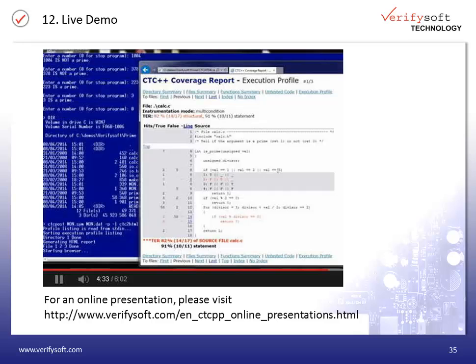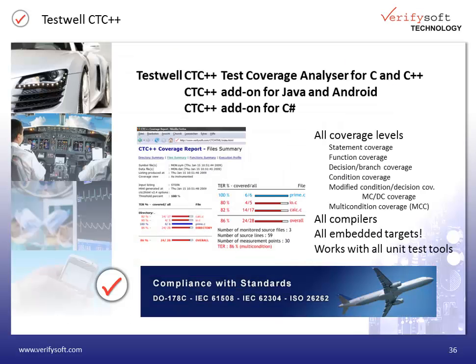Demos of TestWell CTC++ are available on our presentation page — please have a look on the internet. To conclude the presentation, here once more are the most important features of TestWell CTC++: it is a code coverage tool for C, C++, Java and C-Sharp; it analyzes for all coverage levels; it supports all compilers and all embedded targets; it works together with all unit testing tools; it complies with security standards; and qualification kits are available. TestWell CTC++ is your best choice when it comes to code coverage analysis.